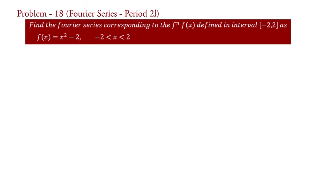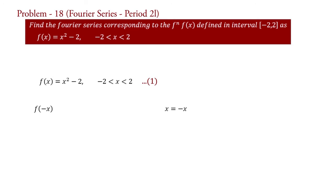It is very clear from the expression of the function that the given function is even. Though you have doubt about it, then follow this process. Let f of x equal to x square minus 2 for minus 2 less than x less than 2. Take x equal to minus x. Therefore f of minus x equal to minus x square minus 2 for minus 2 less than minus x less than 2. Therefore f of minus x equal to x square minus 2 for 2 greater than x greater than minus 2.